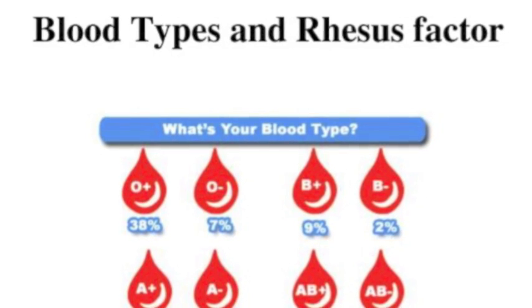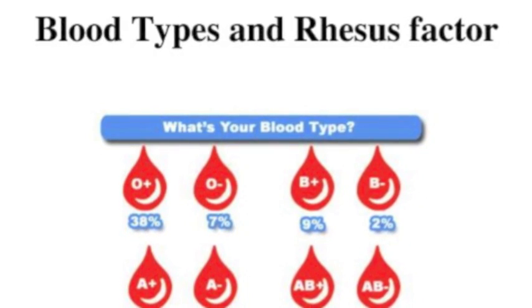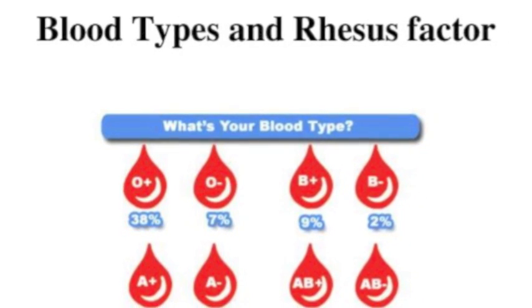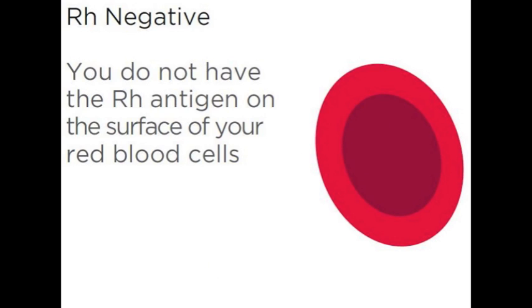Similarly, the RH factor is also controlled by a single gene, but with only two possible alleles: positive for the RH factor or negative for the RH antigen.